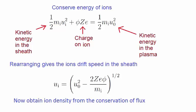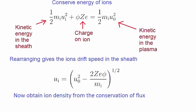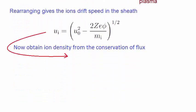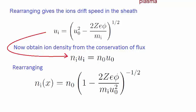Now we need to obtain an expression for the ion density by using the conservation of flux, where we substitute the expression for ion speed in the sheath into the expression for conservation of flux. Rearranging this, we obtain this expression. We now need to obtain an expression for the electron density.